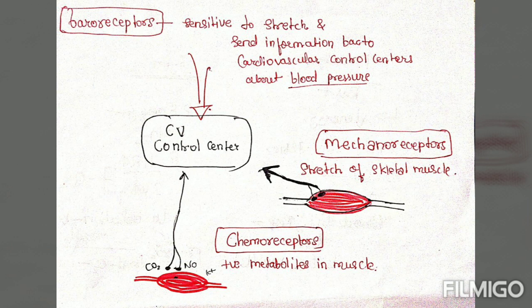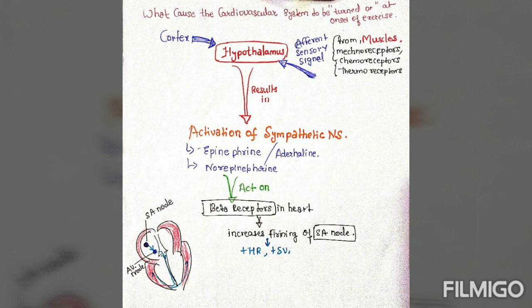Baroreceptors sensitive to increasing blood pressure send signals to cardiovascular centers. All these afferent sensory signals are transferred to the hypothalamus, and in response the motor cortex also stimulates the hypothalamus, resulting in activation of the sympathetic nervous system. This activates the adrenal medulla, which secretes adrenaline and noradrenaline — neurotransmitters that act on our heart.